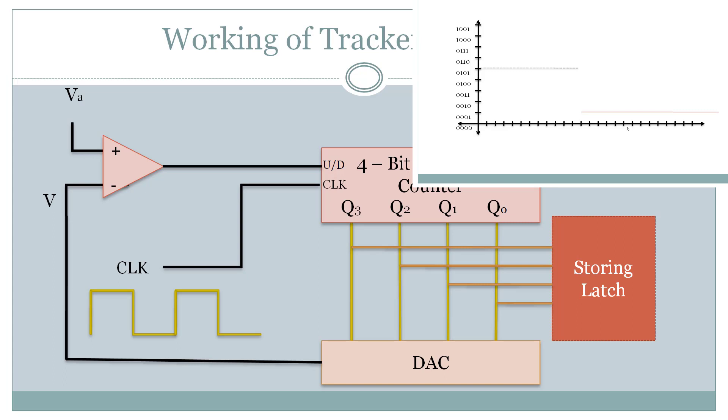So let's say we have an input voltage of 5 volts and the counter is initially at 0. The output of DAC will also be 0 at this moment. The op-amp gives a logical one as output as we can see the input voltage is way higher than the reference value.